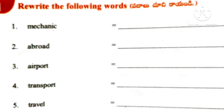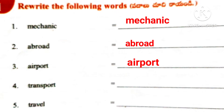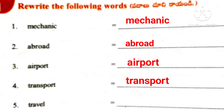Worksheet 1, Roman number 1. Rewrite the following words. First one: Mechanic. Second one: Abroad. Next one: Airport. Next one: Transport. Next one: Travel.